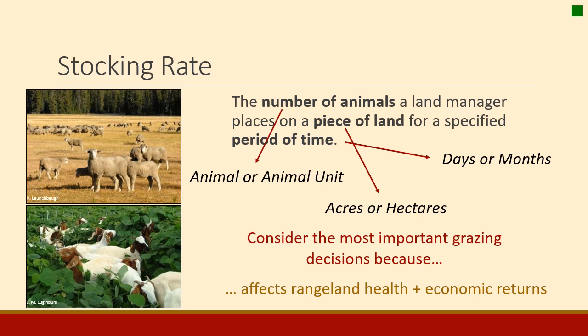When you report a stocking rate, you need to know a number of animals, an area of land, and a period of time — often described in terms of AUMs per acre. The stocking rate here would be 80 cows for three months on 1,200 acres.